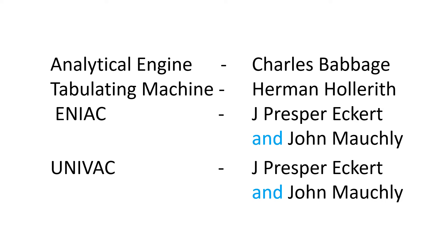Next: ENIAC. It was invented by John Prosper Eckert and John Mauchly. Next: UNIVAC. It was also invented by John Prosper Eckert and John Mauchly.